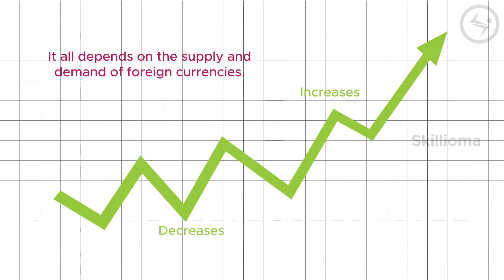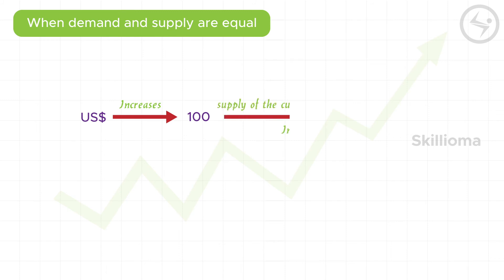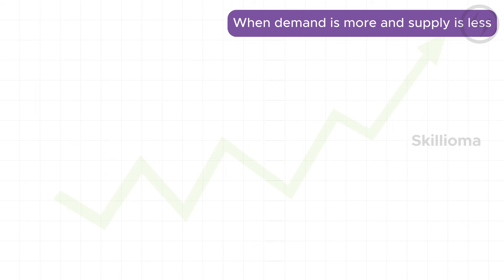There are three cases to understand currency fluctuation better. Number one — when demand and supply are equal: if the demand for the US dollar increases by 100 and the supply also increases by 100, there is no reason for any hike or drop in price; the currency remains stable. Number two — when demand is more and supply is less: if demand for the US dollar increases to 100 but the supply in the market is only 50, there is a shortage.